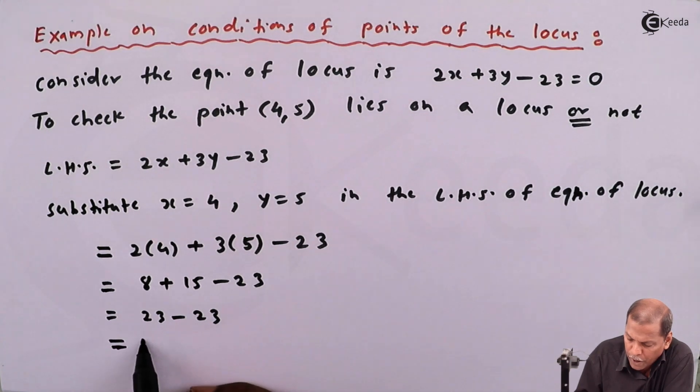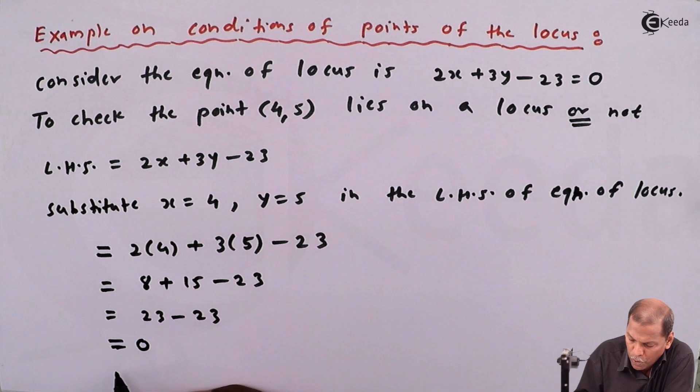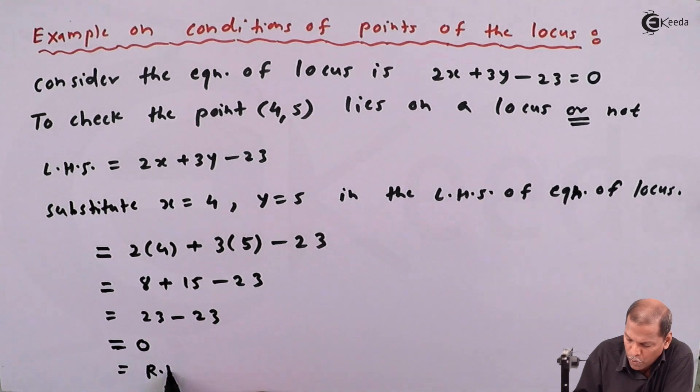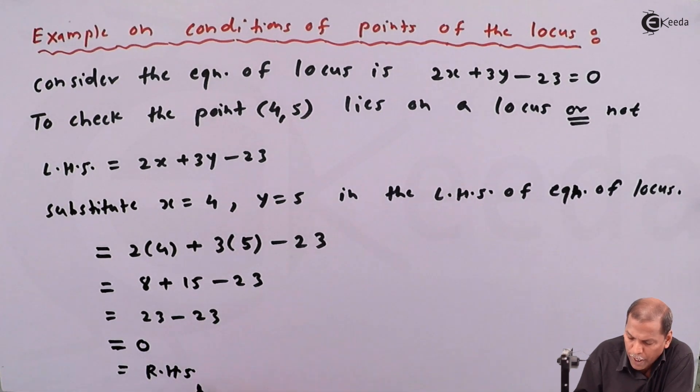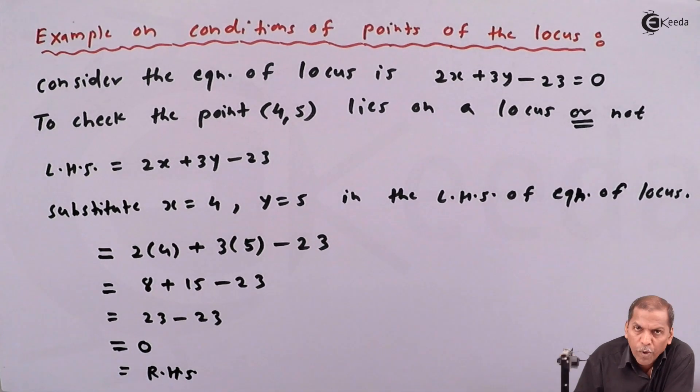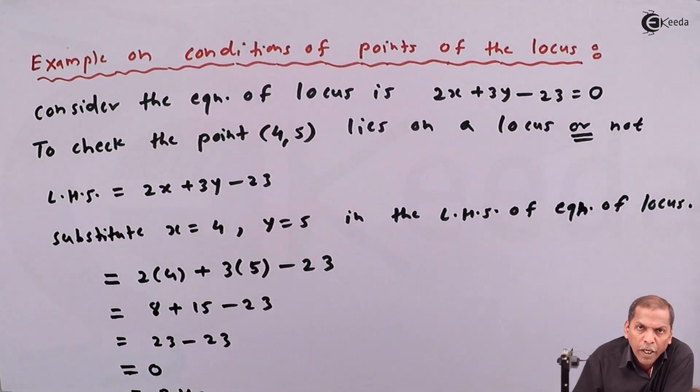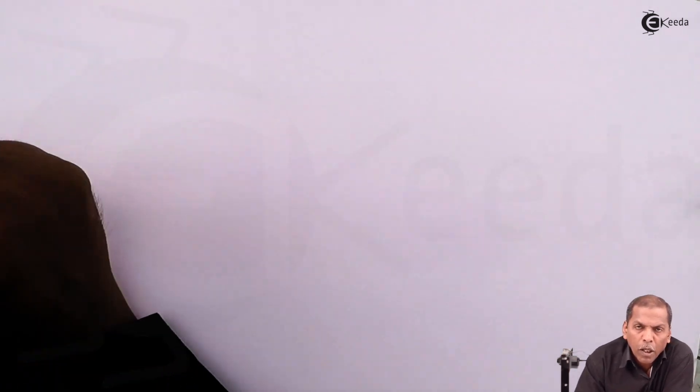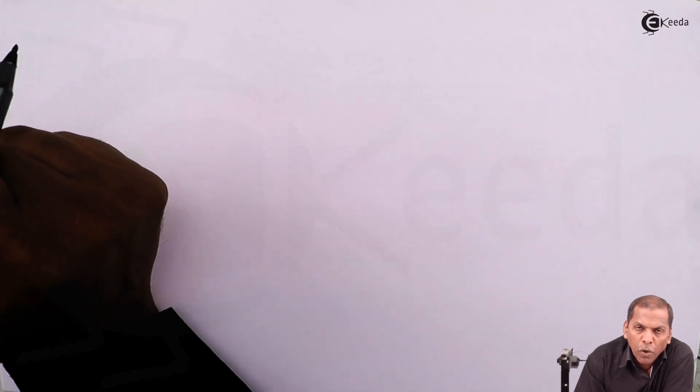Finally, 23 minus 23 gives us 0 and that is equal to right hand side of equation of locus. So here the point satisfies the equation of locus. It means the point lies on the locus.